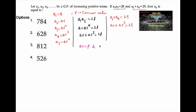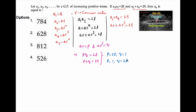Let us consider ar equal to p and ar³ equal to q. This implies p·q is equal to 28 and p plus q is equal to 29. By our assumption we can consider p is equal to 28, q is equal to 1, or p is equal to 1, q is equal to 28.